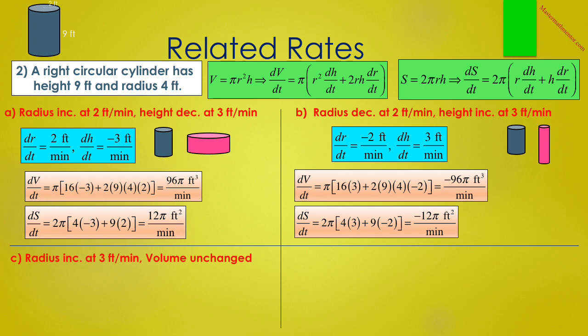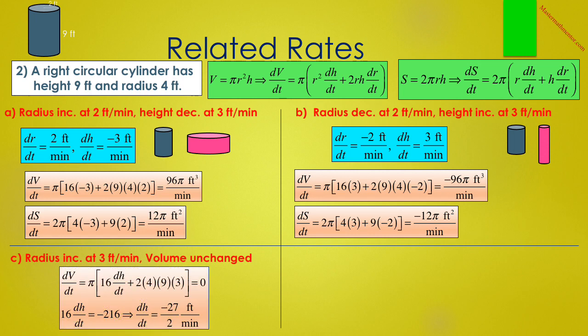In C, the same cylinder has its radius increasing at 3 feet per minute, but at that moment its volume is unchanged. We want to find how fast the height is changing. Our formula gives dV/dt equals π times the quantity 16 dH/dt plus 2 times 4 times 9 times 3. Since the volume is unchanged, we set that equal to 0. So 16 dH/dt equals negative 216, and therefore dH/dt equals negative 27/2 feet per minute. The height must be decreasing at 13.5 feet per minute for the volume to remain unchanged.